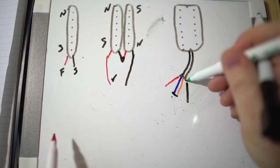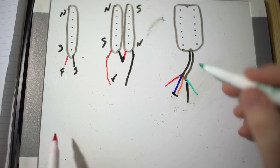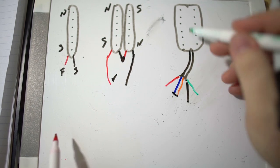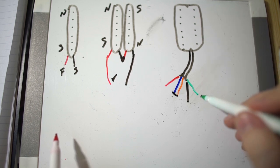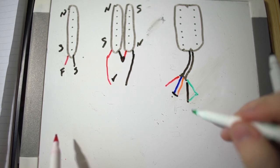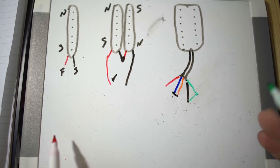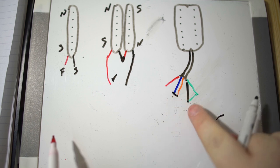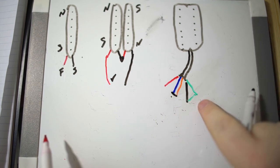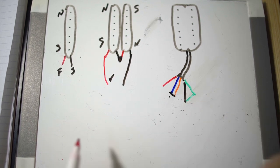What if your humbucker comes with five leads like so many do? All this is an extra ground that goes to the shield of the pickup, the back plate, so it adds a little more shielding. In that situation, you would wire these two together. You would wire your ground and your shield ground together, which is usually green and black, but every pickup company is going to have a different wiring scheme. You can usually look them up online with no problem. You wire them together and you just tape these off.